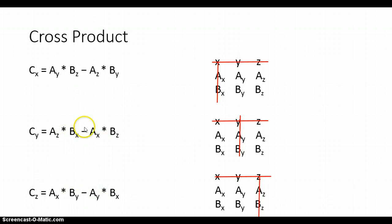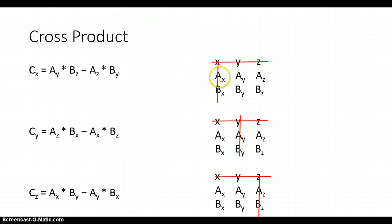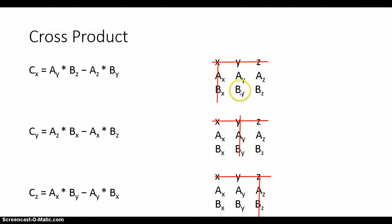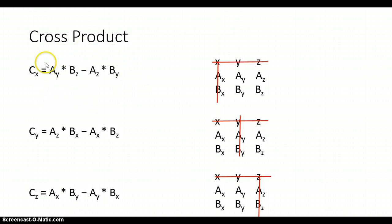How do we find that? We can find it via determinants. I set up a matrix where the first row contains x, y, z unit vector labels, the second row contains the components of vector a (Ax, Ay, Az), and the third row contains the components of vector b (Bx, By, Bz). To find the x component, we draw a line through the first column and first row. The remaining exposed terms are Ay, Az, By, and Bz. Multiplying Ay times Bz and subtracting Az times By gives the x component of the cross product.